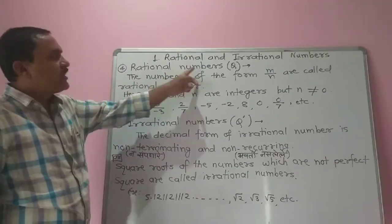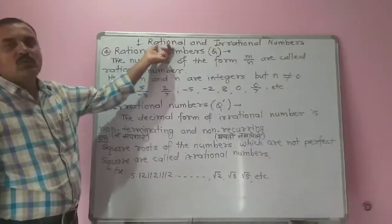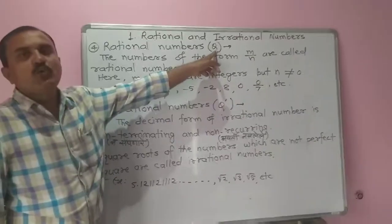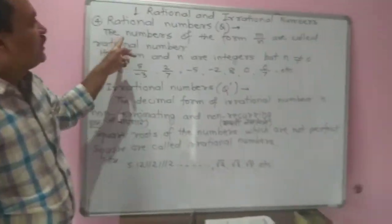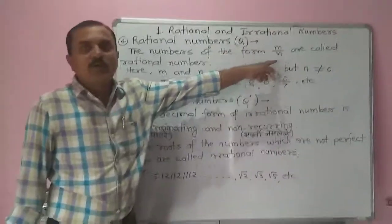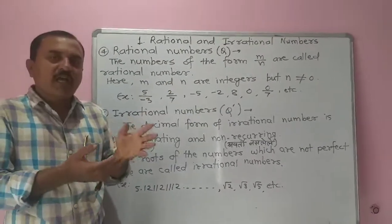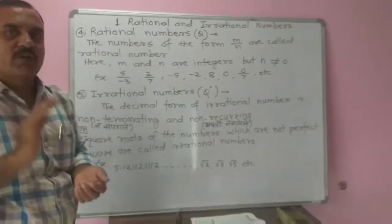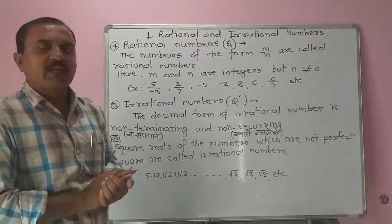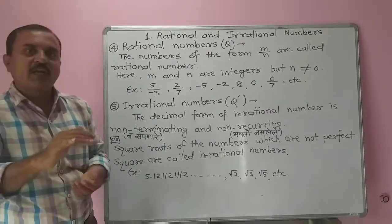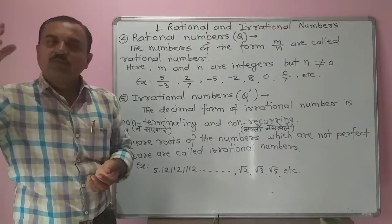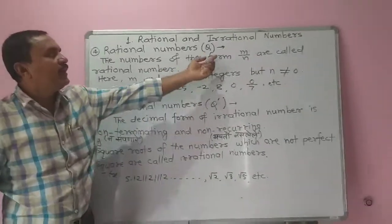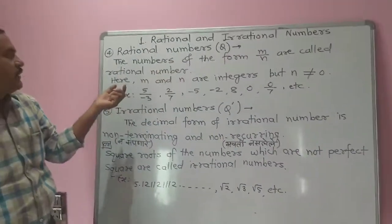Now rational numbers. We are going to read the name of the chapter. Rational numbers are denoted by Q. The numbers of the form m upon n are called rational numbers. We are going to read this three times. Here m and n are integers, and the main point is that n is not equal to zero. The denominator cannot be zero.